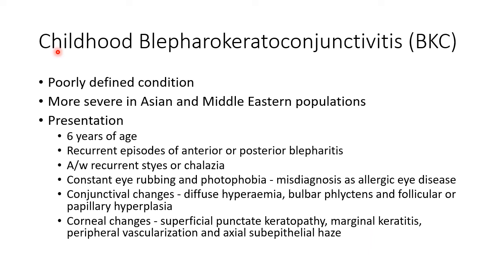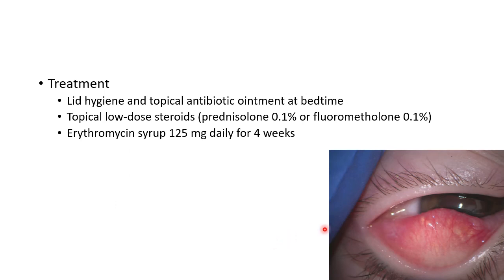Blepharokeratoconjunctivitis (BKC) in childhood is a poorly defined condition, more severe in Asian and Middle Eastern populations. It usually occurs around 6 years of age with recurrent episodes of anterior or posterior blepharitis, recurrent styes or chalazia, constant eye rubbing and photophobia — so it can be misdiagnosed as allergic eye disease. Conjunctival changes include diffuse hyperemia, phlyctenules and follicular or papillary hyperplasia. Corneal changes include superficial punctate keratopathy, marginal keratitis, peripheral vascularization and axial subepithelial scarring. Treatment includes lid hygiene, topical antibiotic ointment at bedtime, topical low-dose steroids such as prednisolone 0.1% or fluorometholone 0.1%, and erythromycin syrup 125 mg daily for 4 weeks.